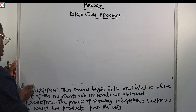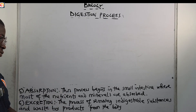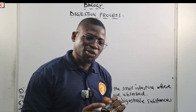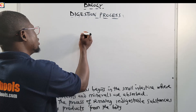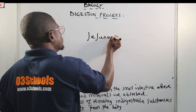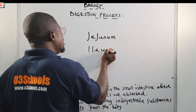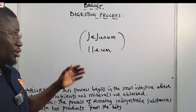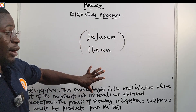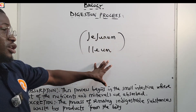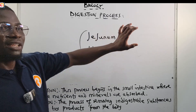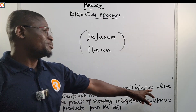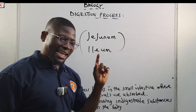The fifth process is absorption. This process begins in the small intestine, where most of the nutrients and minerals are absorbed. The small intestine has three parts: the duodenum, the jejunum, and the ileum. Absorption of nutrients begins majorly from the jejunum — which is the middle part of the small intestine — and the ileum, which is the end of the small intestine.